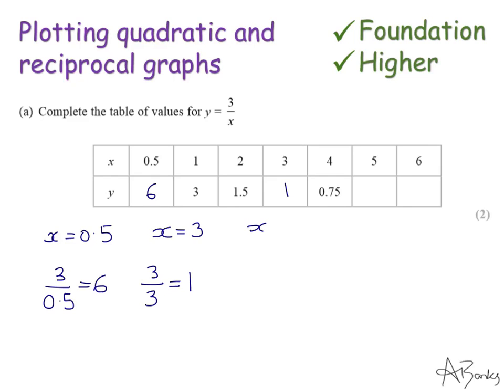Then I have x is 5. So my y is 3 divided by 5 which is 3 fifths. As a decimal that's going to be the same as 6 tenths which is 0.6.